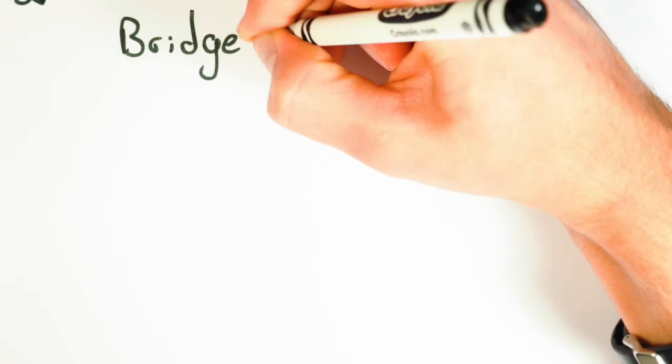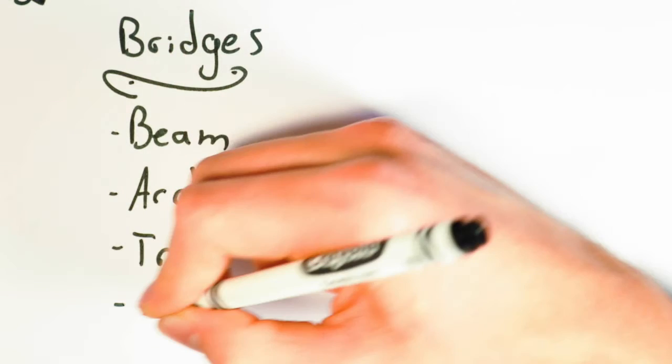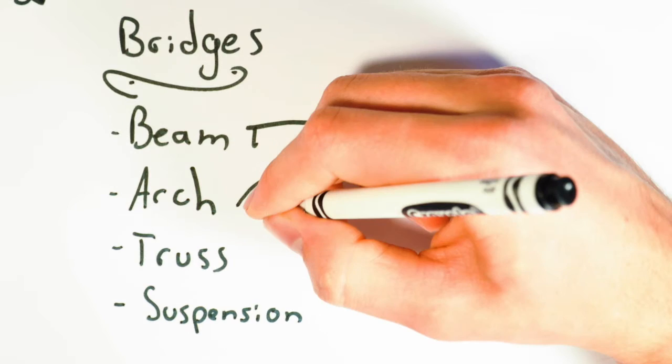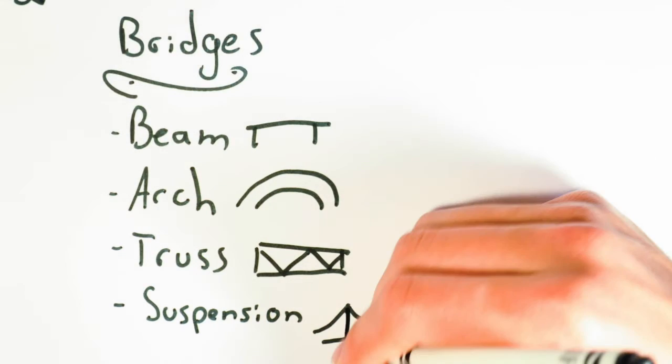There are four main types of bridge: beam, arch, truss, and suspension. And different bridges can be made using a combination and variations of these.